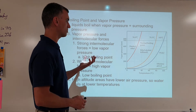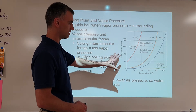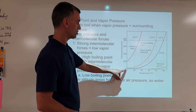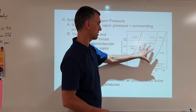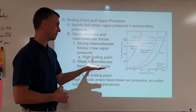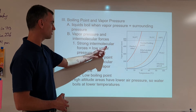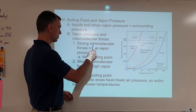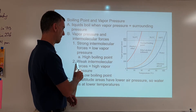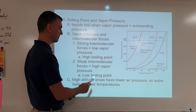We can look at a graph that tells us how to predict the boiling point of any substance — it shows the vapor pressure of different substances. If the forces hold together strongly, they don't evaporate much — that's low vapor pressure. If they don't hold together very strongly, they evaporate easily and a lot — that's high vapor pressure, which also means low boiling point.